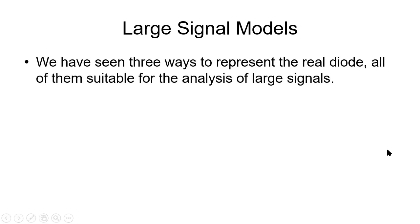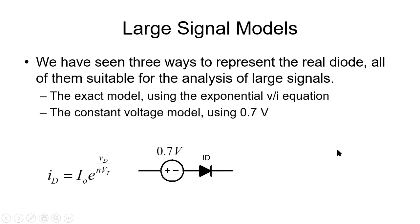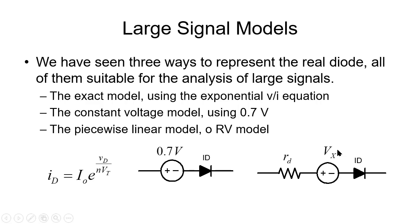In our previous two videos we have seen ways of representing the real diode — all of them suitable for the analysis of large signals: the exact model, the constant voltage model, and the piecewise linear model, also known as the RV model. All of them are large signal models for the diode.